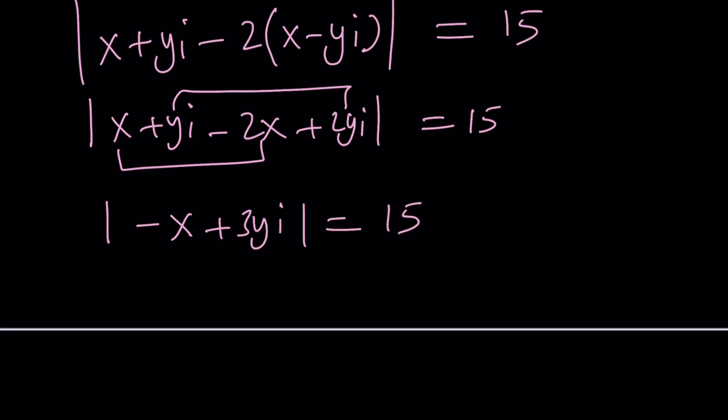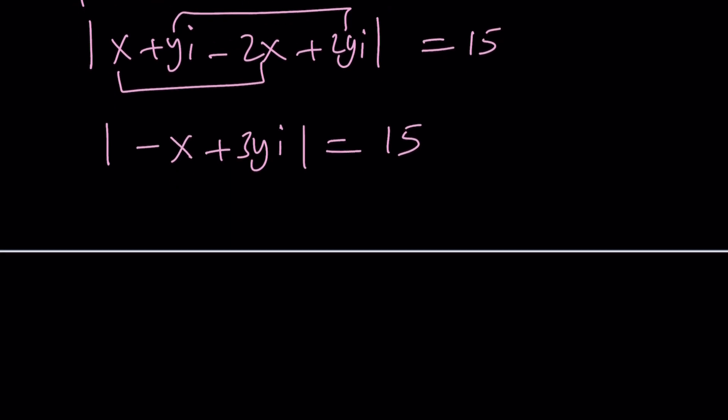Now what does that mean? We have the absolute value of something. Just use the definition of absolute value. That's going to give you the square root of (-x)² which is x², plus (3y)² which is 9y², and then it's equal to 15.